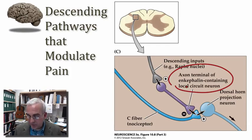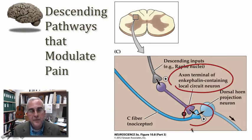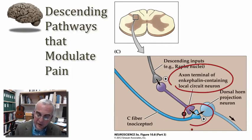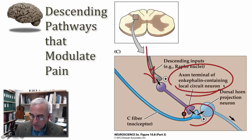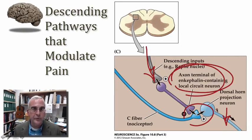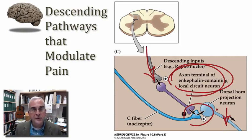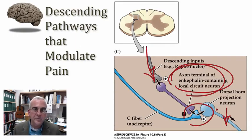These neuropeptides inhibit the activity of the nociceptive afferent as it makes synaptic contact with the dorsal horn neuron. Descending inputs from the raphe nucleus, locus coeruleus, and medullary reticular formation can drive activation of these local circuit neurons, effectively turning off the output from the dorsal horn. That is one way the brain can produce an analgesic effect right at the very first synaptic junction along our nociception pathway.